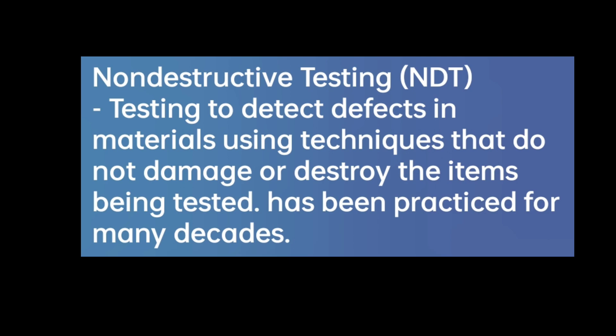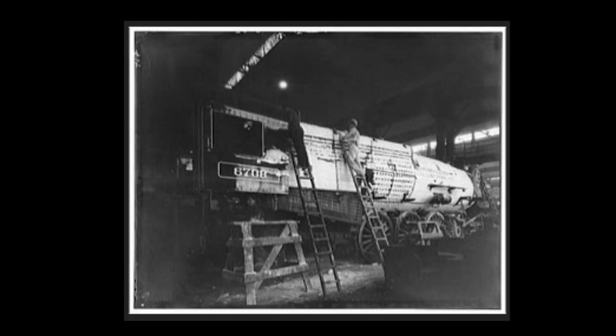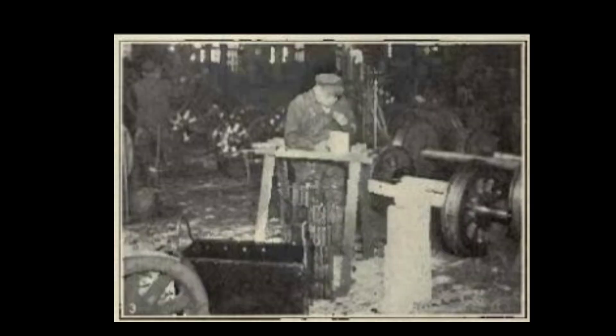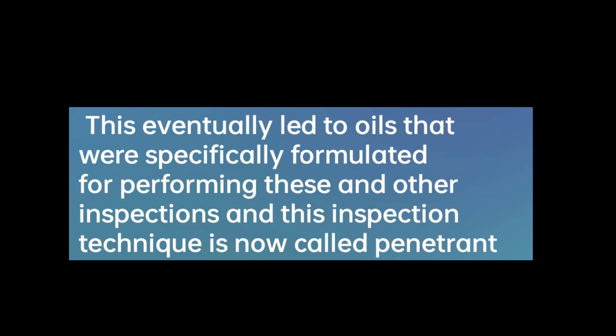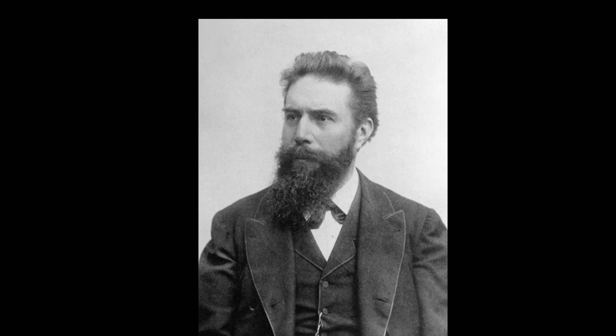Nondestructive testing has been practiced for many decades. One of the earliest applications was the detection of surface cracks in rail car wheels and axles. The parts were dipped in oil, then cleaned and dusted with a powder. When a crack was present, the oil would seep from the defect and wet the powder, providing a visual indication that the component was flawed. This eventually led to oils specifically formulated for these inspections, and this technique is now called penetrant testing.